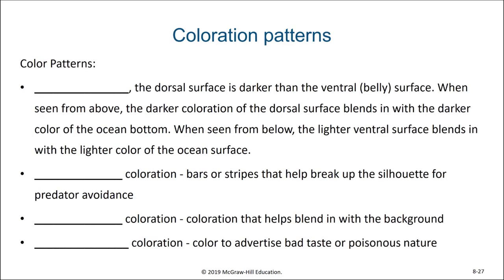One aspect of fish has to do with their coloration patterns, and there are a few general themes. The first is countershading. This is the case where the dorsal surface is darker than the ventral or belly surface. When seen from above, the darker coloration of the dorsal surface blends in with the darker color of the ocean bottom. When seen from below, the lighter ventral surface blends in with the lighter color of the ocean surface, so they are camouflaged both from above and below.